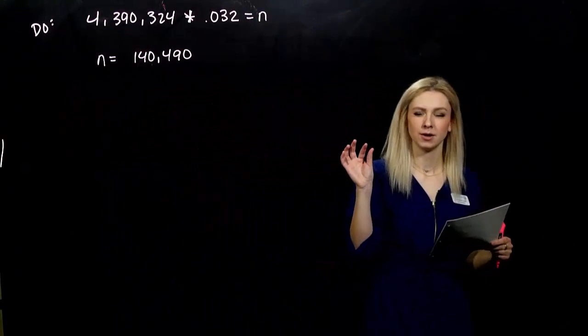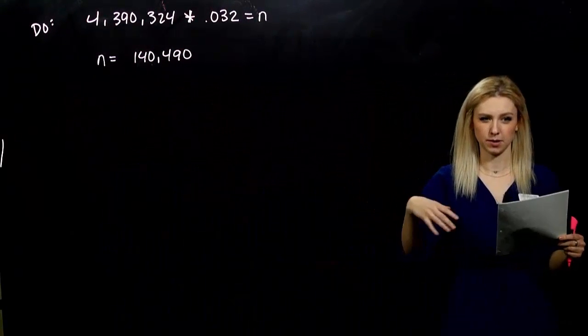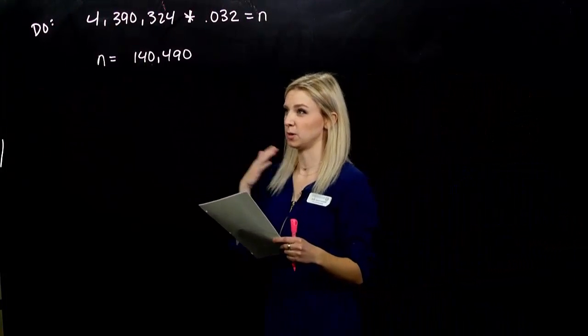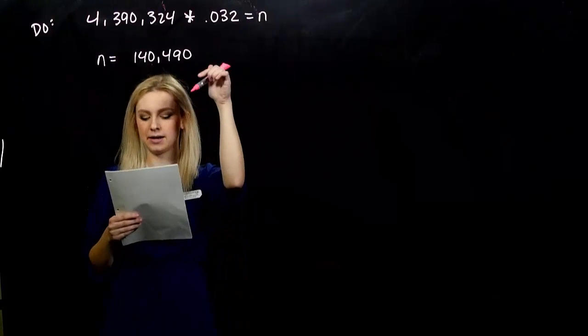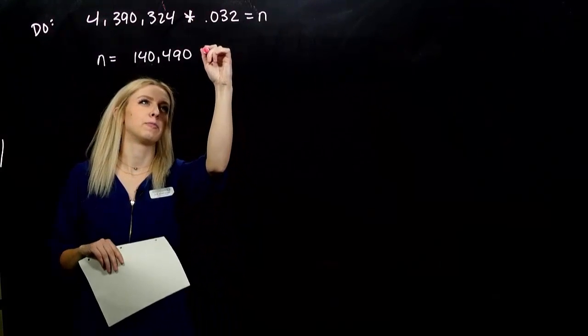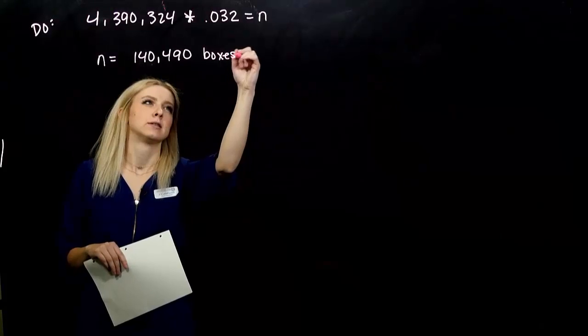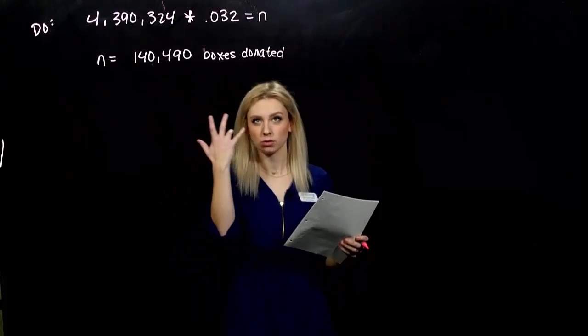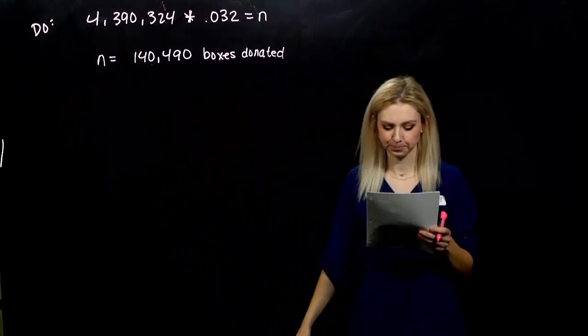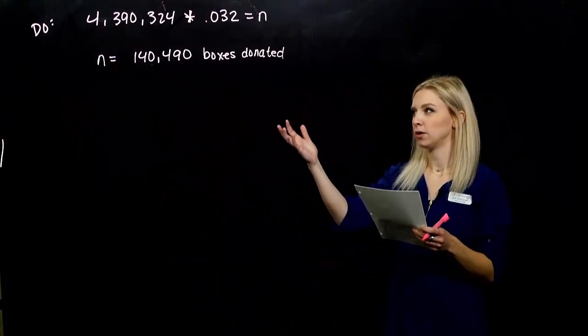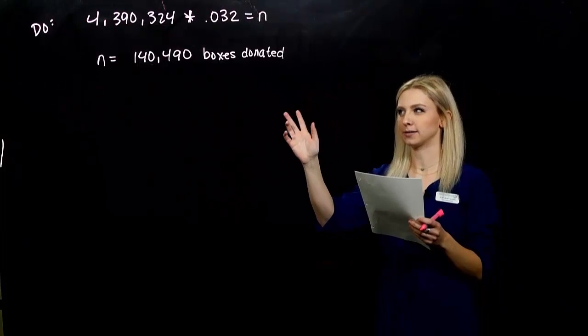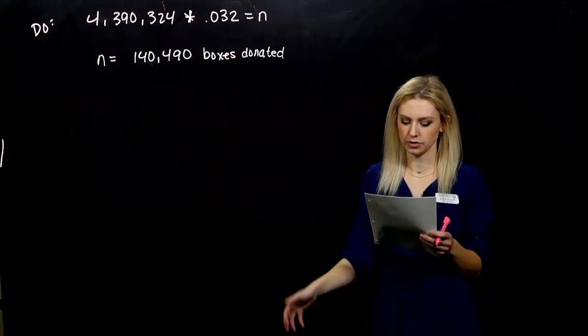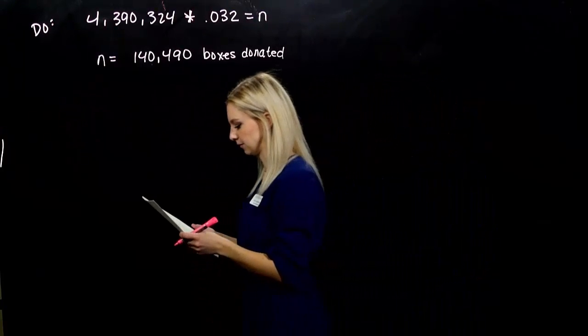n is equal to 140,490. But with application problems, we want to at least give a unit. If we can give a sentence explaining what happened, we want to do that as well. So what does n represent? This is number of boxes donated. So good practice would be to say, of the 4,390,324 boxes, 140,000, around there, were donated to military personnel on base.